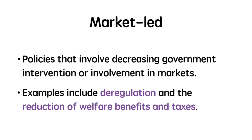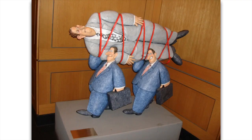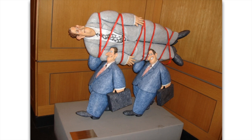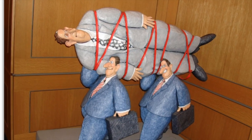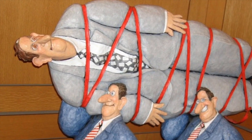The reduction of corporation tax makes firms more profitable as they give up less profit in the form of tax. The reduction of income tax also provides individuals an incentive to work as they can keep more of their income. In this picture you see a businessman tied up in red tape being carried along by government bureaucrats. The meaning behind this is that government regulations limit the ability of business to conduct business and make profit. By limiting regulations, businesses can focus on their core activities that generate profit.